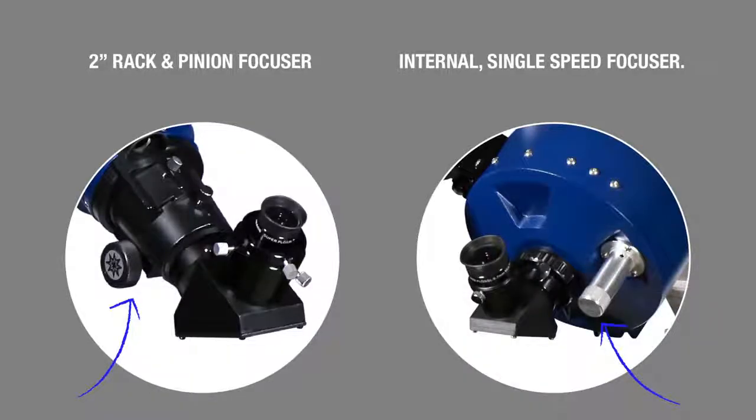The 5-inch refractor and 6-inch and 8-inch reflectors are equipped with a 2-inch rack and pinion focuser, while the 6-inch MAC and 6-inch ACFs are equipped with an internal single-speed focuser that accepts standard SCT and ACF accessories, including 2-inch star diagonals.